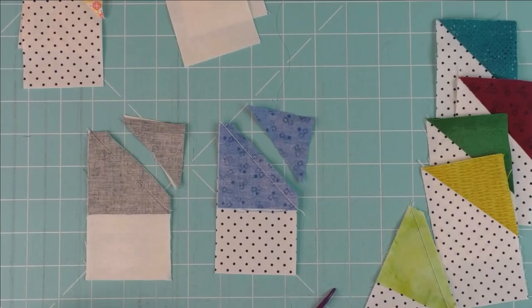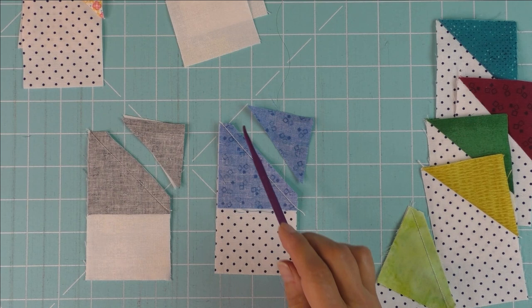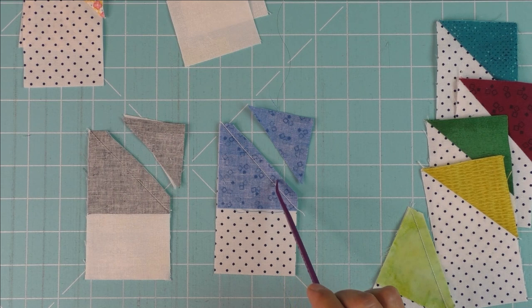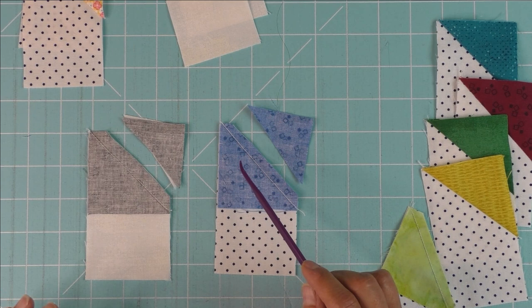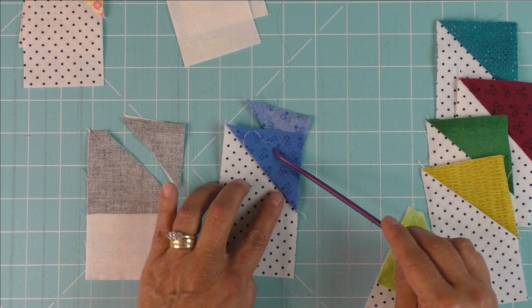You might get better points if you're not getting good points by stitching just slightly to the right of that line. Here are the stitch and flip pieces where you cut off the right side corner. You don't have to have an exact quarter of an inch. I just cut these with my scissors and it goes a little bit faster.